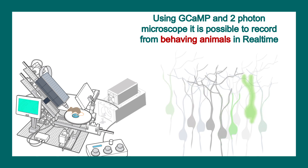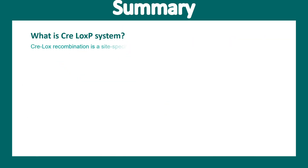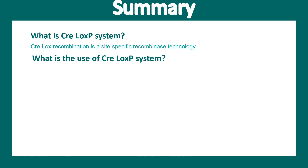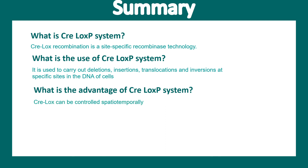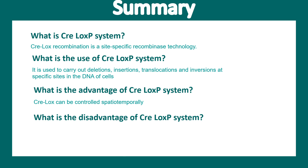In summary, the Cre-LoxP system is a site-specific recombinase-based technology. Its most popular applications include creating deletions, insertions, or translocations in a gene of interest. The key advantage is spatiotemporal control — gene deletion can be controlled both spatially and temporally. However, one disadvantage is that the Cre-LoxP system can be leaky: even if a particular promoter is not expressed in a given tissue, Cre may still be active there, which is often a problem when using this system.